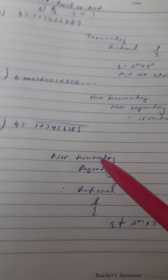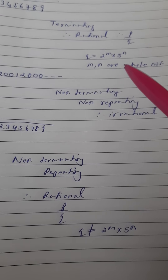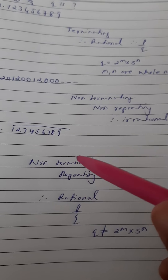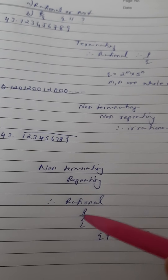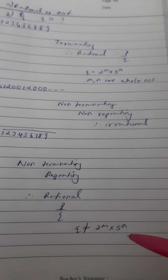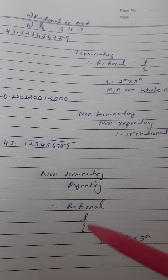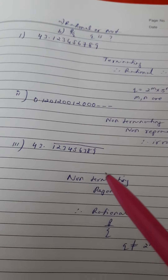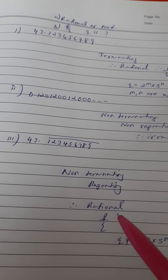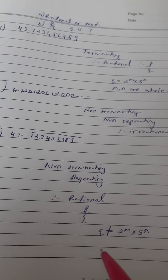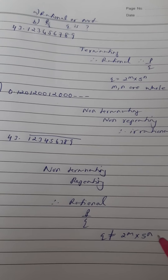Now what can we say about q for this third number? Since it is terminating when the denominator is in the form 2^m × 5^n, but here it is non-terminating, q will NOT be in the form of 2^m × 5^n, where m and n are whole numbers. So the answer: it is non-terminating repeating, therefore rational and expressible as p/q, however q will not be in the form of 2^m × 5^n.